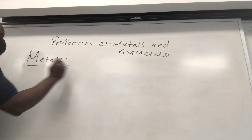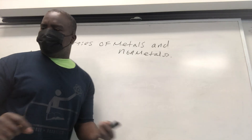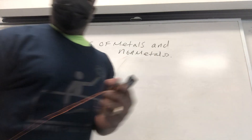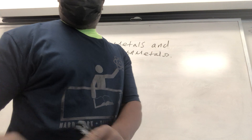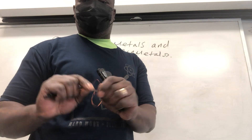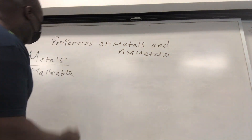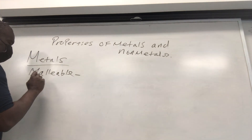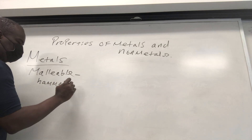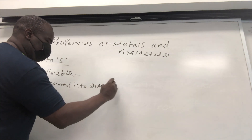Metals tend to be malleable. What does malleable mean? Malleable means it can be bent into shapes. So malleable means you can hammer or bend it into different shapes. That's malleability — bendability.